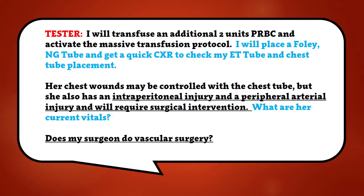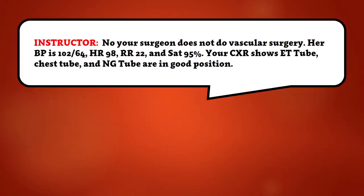What are her current vitals? Does my surgeon do vascular surgery? No, your surgeon does not do vascular surgery. Her blood pressure is 102 over 64, heart rate is 98, respirations 22, and SATs 95%. Your chest x-ray shows ET tube, chest tube, and NG tube are in good position.